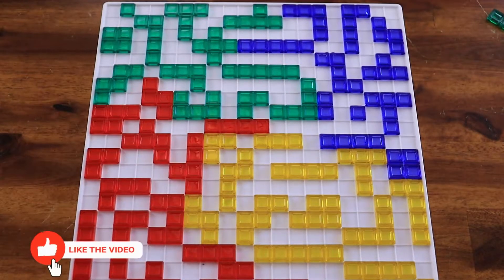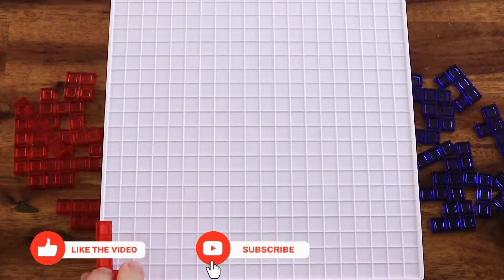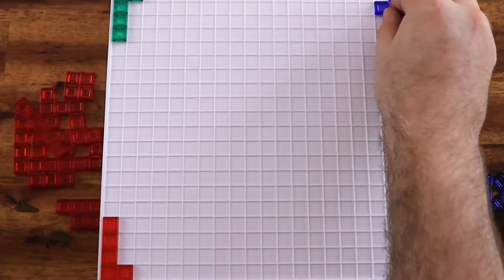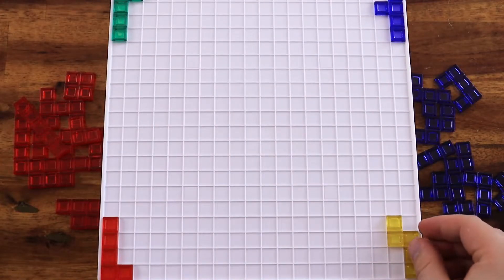The object of the game is to place the most pieces on the board. Players take turns laying down one piece at a time. On their very first turn, each player must place a piece covering a corner square.